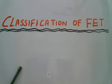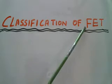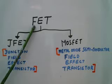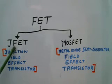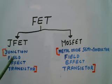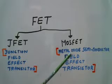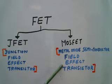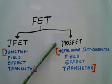In this session we'll discuss about classification of FET, Field Effect Transistor. FET is divided into two types: JFET and MOSFET. JFET stands for Junction Field Effect Transistor and MOSFET stands for Metal Oxide Semiconductor Field Effect Transistor. First we'll discuss about JFET, then we'll discuss about MOSFET.